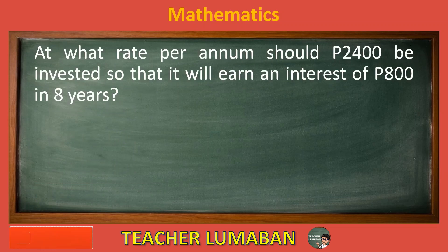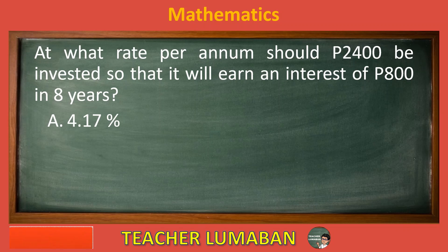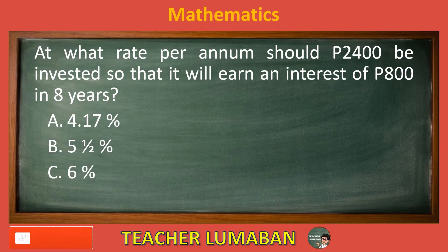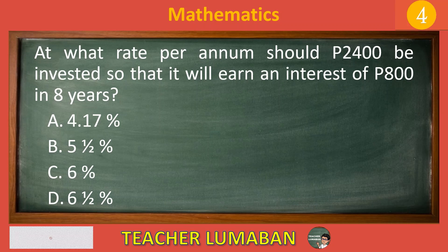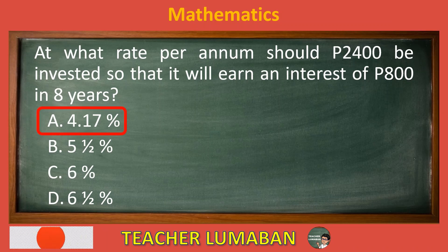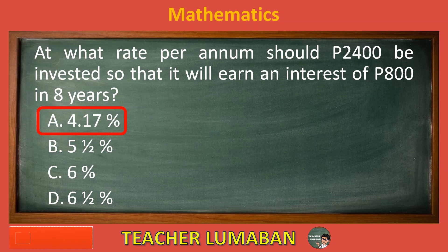At what rate per annum should 2,400 pesos be invested so that it will earn an interest of 800 pesos in eight years? Letter A: 4.17%. Letter B: 5 and one half percent. Letter C: 6 percent. Letter D: 6 and one half percent. The correct answer is letter A, 4.17%. A 2,400 pesos investment should earn 800 pesos interest in eight years at 4.17% per annum.